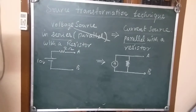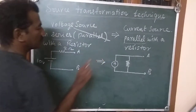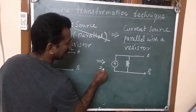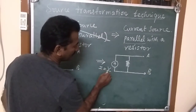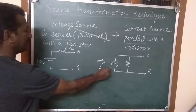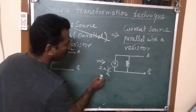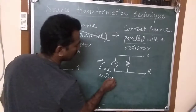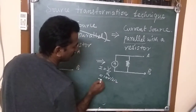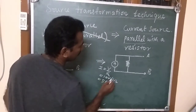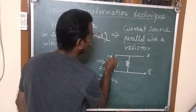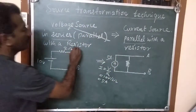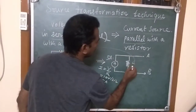Now we are going to calculate the current source. From Ohm's law, we know the formula I is equal to V divided by R. Here V is 10 volts and R is 2 ohms, therefore the value of the current source is 5 amperes.